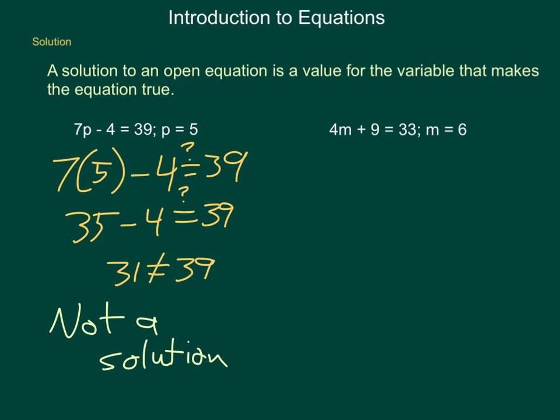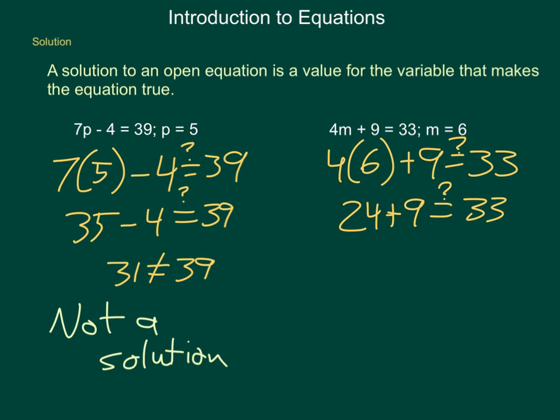Checking our second one, again, we have 4m plus 9 equals 33. And we're assigned the value of 6 for m. So start by substituting in 4 times 6. Again, I place that in parentheses. Plus 9 equals 33, and we're questioning if this is true. 4 times 6 is 24, plus 9. We're checking to see if this is equal to 33, and we come out with 33 on the left, 33 on the right. So that means 6 is the solution to this equation.